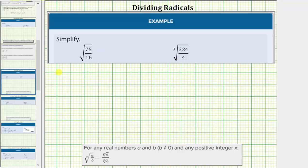For our first example, we have the square root of 75 sixteenths. We should always check to see if the fraction will first simplify. In this case, though, the only common factor between 75 and 16 is one, and therefore the fraction does not simplify.